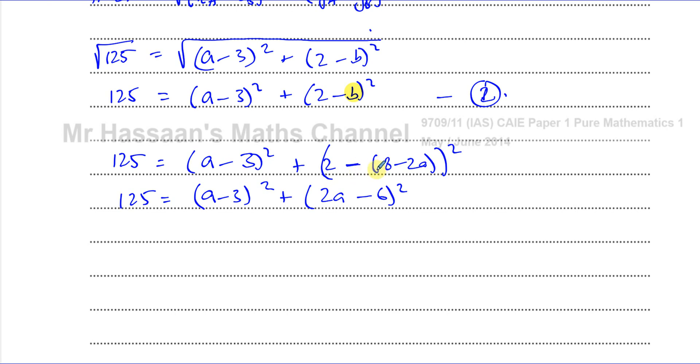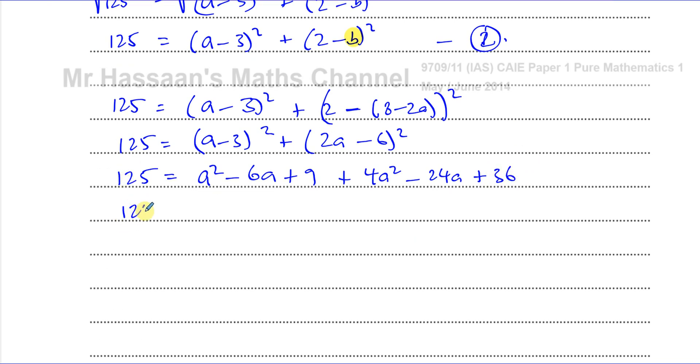So now this is an equation with only a in it, and if I expand the brackets and simplify, I should be able to get my values of a. So I have a squared minus 6a plus 9, and squaring the second bracket: 4a squared minus 24a plus 36. So simplifying all of this, 125 equals 5a squared minus 30a plus 45.